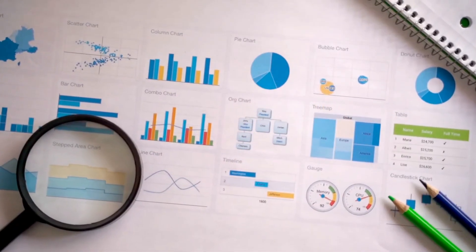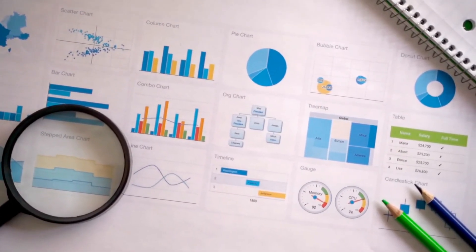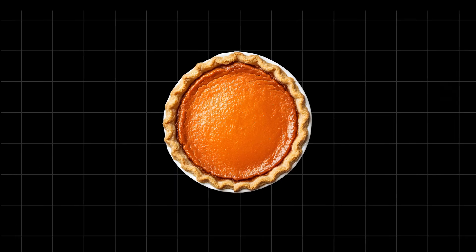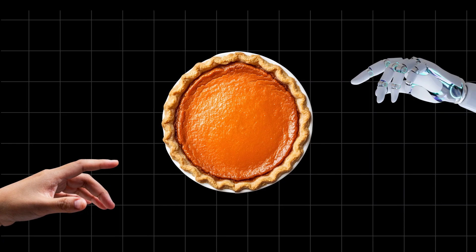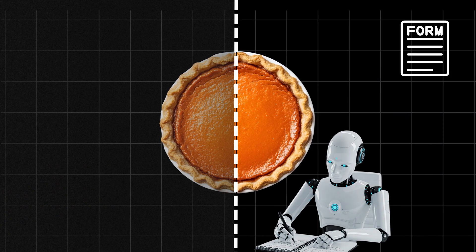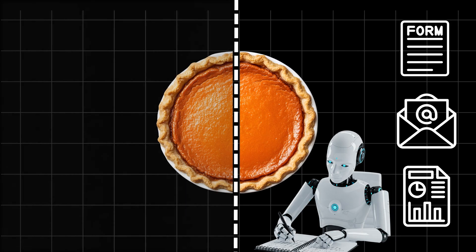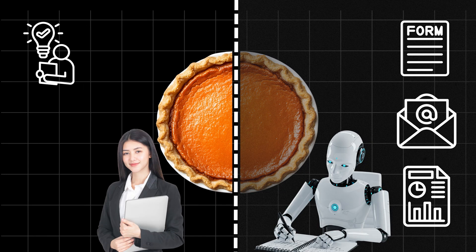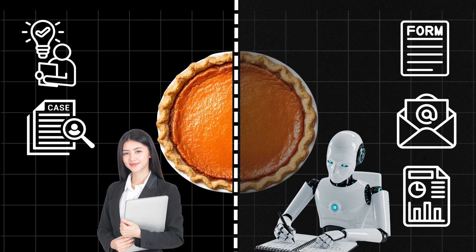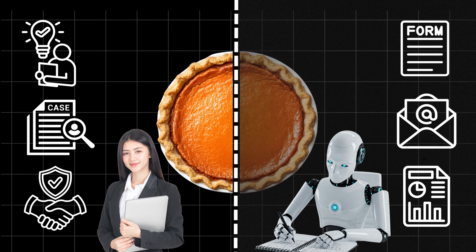Those numbers are helpful, but how does this play out at your desk, in real life? Think of your job as a pie. Some slices are repetitive and rule-based: filling forms, drafting standard emails, pulling simple reports. The rest is human: understanding context, handling unusual cases, earning trust, making final calls.